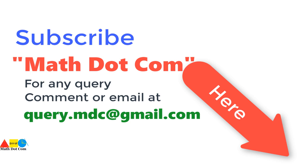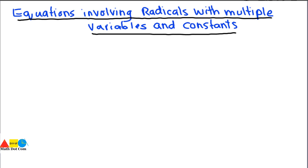Hello everyone, today we are going to discuss a few examples of how you can solve linear equations involving radicals with multiple variables and constants. In our previous lecture, we saw equations with only one variable, so these examples will be a little bit more complex so that you can understand how to solve complex equations involving variables and constants.